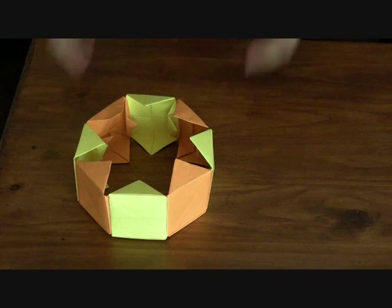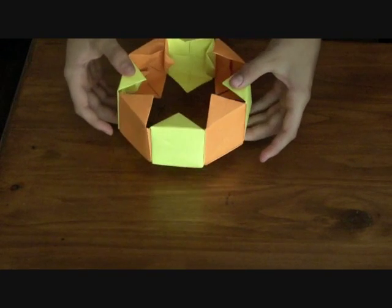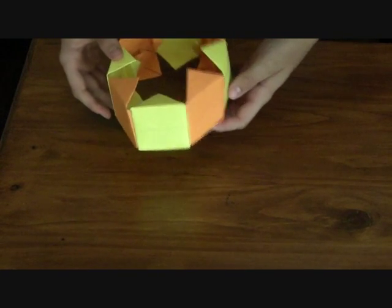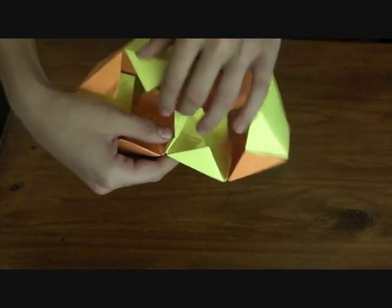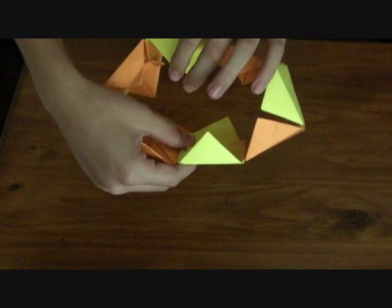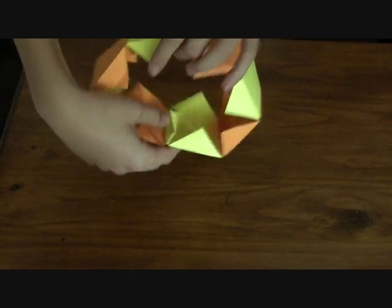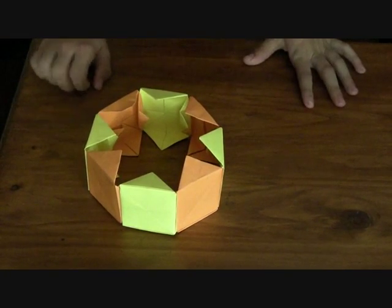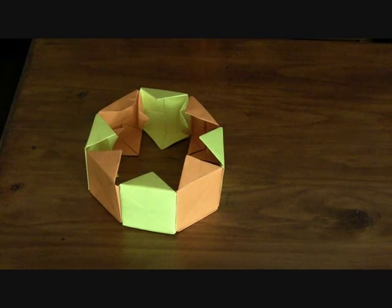Alright, so now we've got our 8 modules all put together in our little circle. If you're having trouble with them staying together, just fold that little corner over here so they stay down, and that should keep them together nicely, just like that. Alright, now you're going to need another 10 modules.